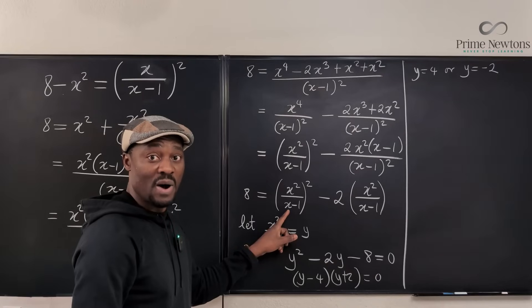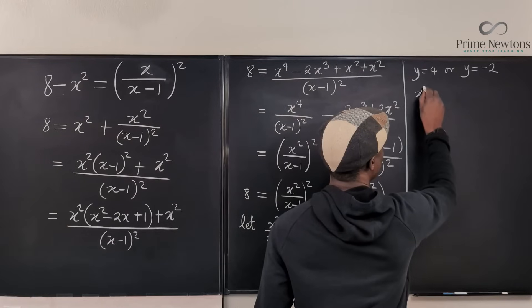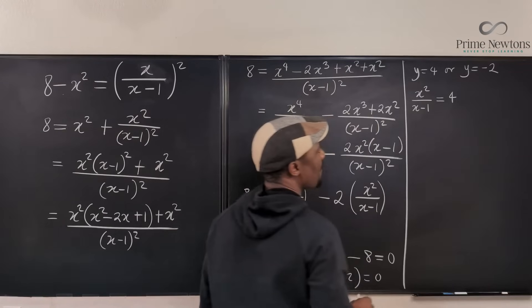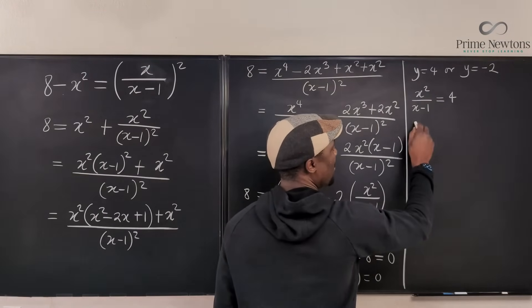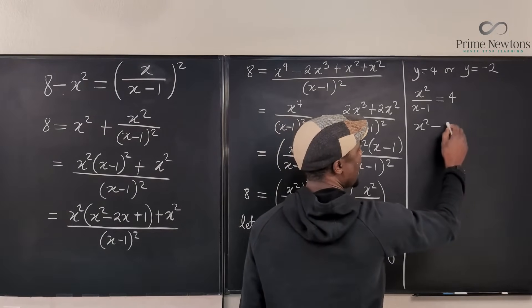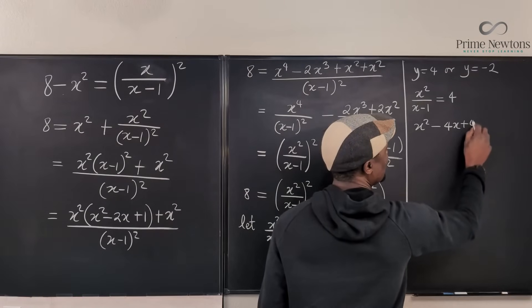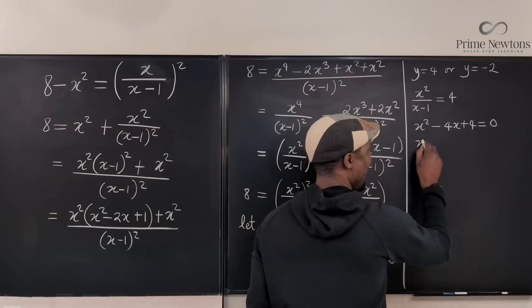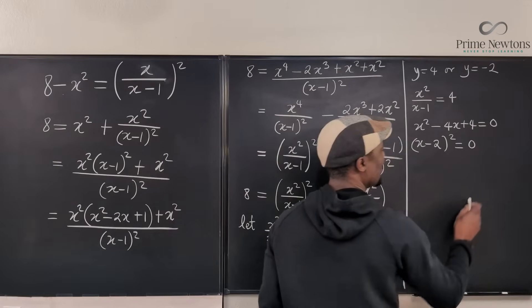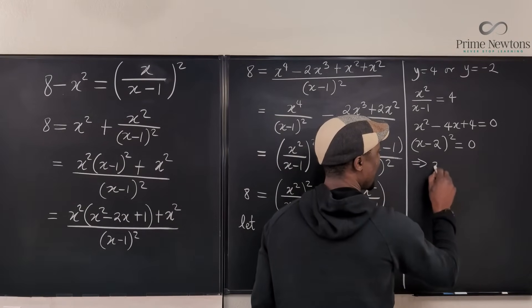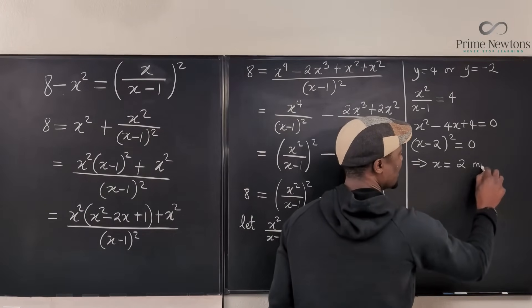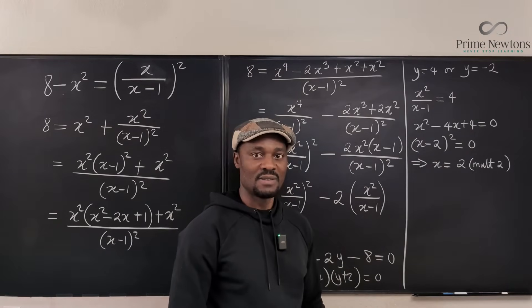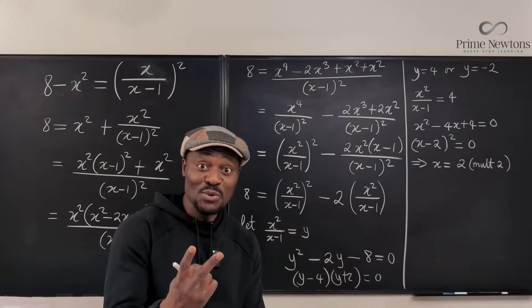Now we go back and solve for x. For y equals 4: x squared over (x minus 1) equals 4. Cross-multiplying gives x squared minus 4x plus 4 equals 0. Factoring this is a perfect square: (x minus 2) squared equals 0, which implies x equals 2 with a multiplicity of 2. So we have two answers both equal to 2 from this case.